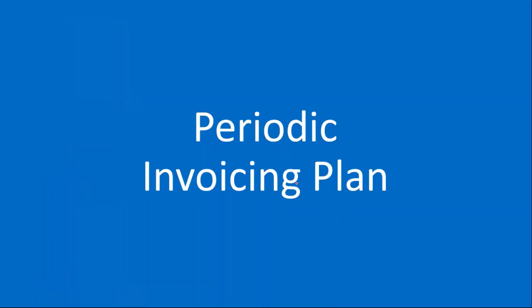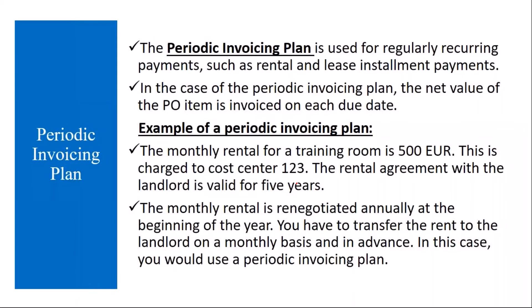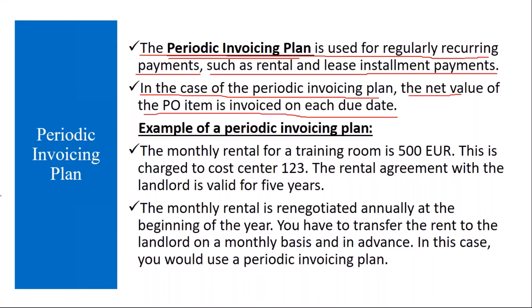Now we will see these things in detail, starting with the periodic invoicing plan. The periodic invoicing plan is used for regularly recurring payments such as rental and lease installment payments — you make payment regularly at a particular date. In the case of the periodic invoicing plan, the net value of the PO item is invoiced on each due date. For example, the monthly rental for a training room is 500 euros: you hire a training room from a vendor and make the monthly rental payment. That kind of thing comes under the periodic invoicing plan.